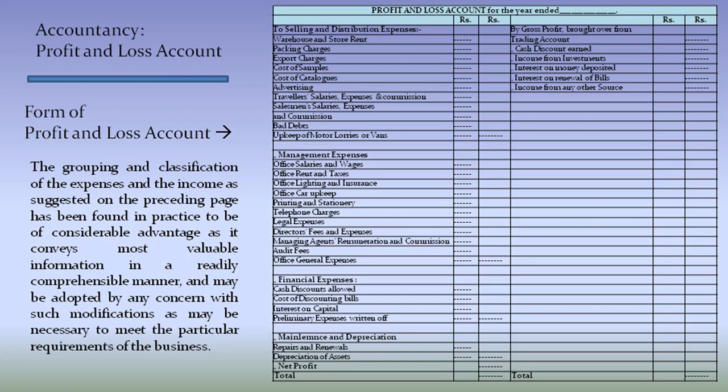On the credit side: by gross profit brought over from trading account, by cash discount received, by income from investments, by interest on money deposited, by interest on renewable bills, by income from any other source. By netting off, we get a net profit, which we record on the debit side and close the account by totaling both the sides.